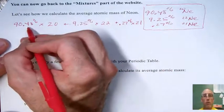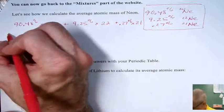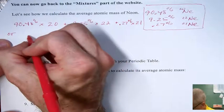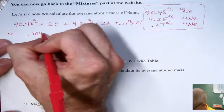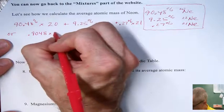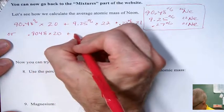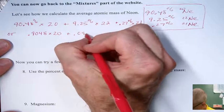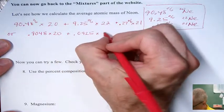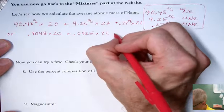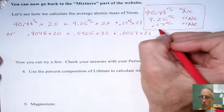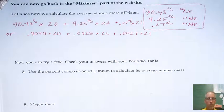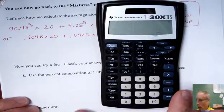I bet your math teacher would want you to be able to know how to do this. This would be 0.9048, just moving the decimal place twice, times 20, plus 0.0925, when you move the decimal place twice on that one, plus 0.0027 times 21. So we'll grab a calculator and see what those add up to. All right, so I've got a calculator here. It really doesn't matter what type you use.